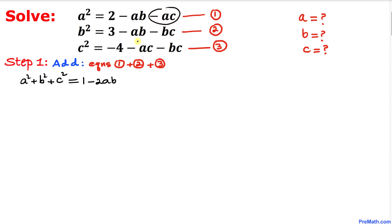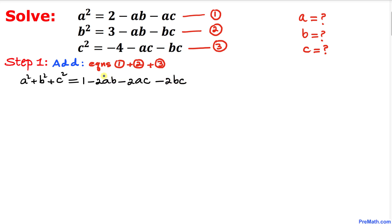Negative ac and negative ac gives us negative 2ac, and negative bc and negative bc gives us negative 2bc. Now let's move negative 2ab, negative 2ac, and negative 2bc to the left hand side.